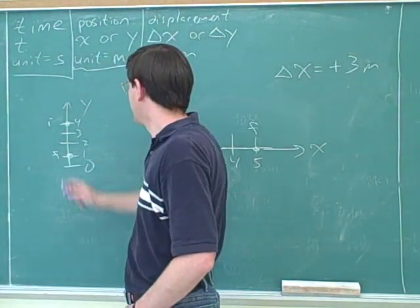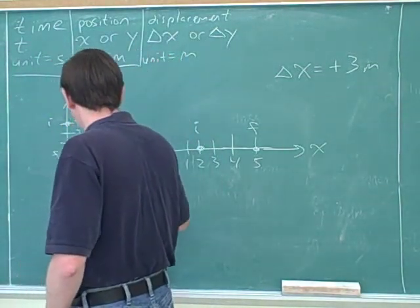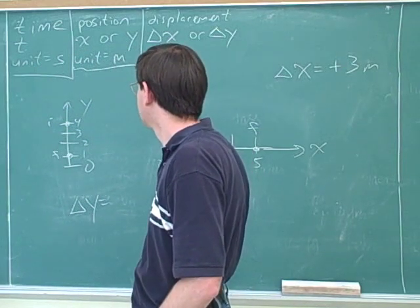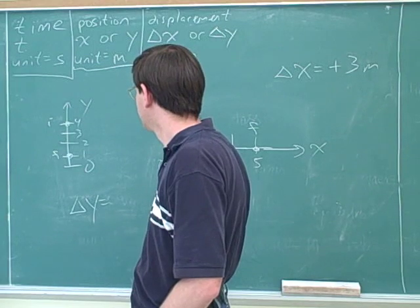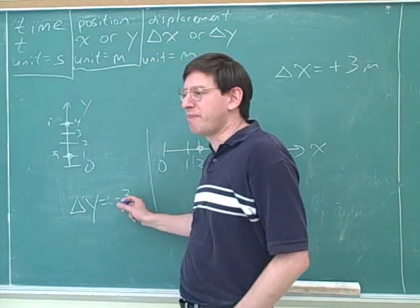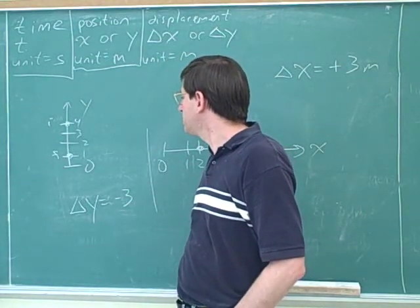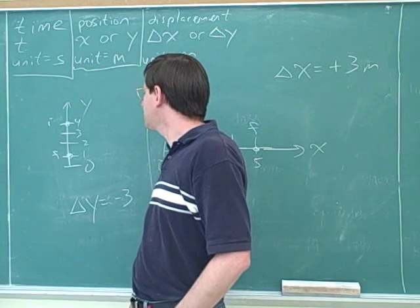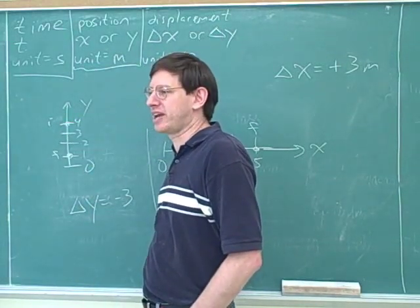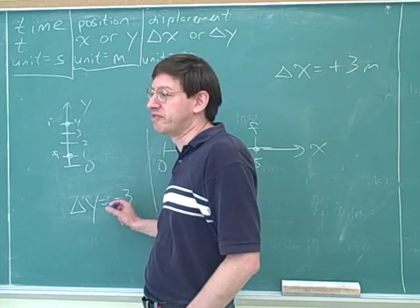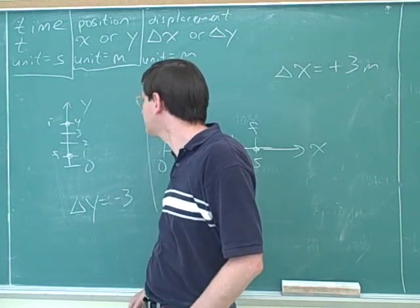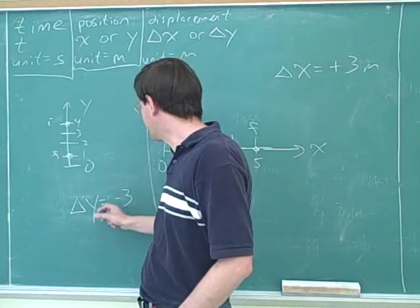So if this is the initial point and this is the final point, what would delta y be? Delta y is plus 1 minus plus 4. So 1 minus 4 is negative 3. Good. Now, you basically did that mathematically, and that's perfectly fine. But you could also just do that based on common sense. How many steps are we moving? It's clear we're moving 3 steps. And are we moving in the positive direction or the negative direction? Negative. That's right. So for me, that's an easier way to come up with this.